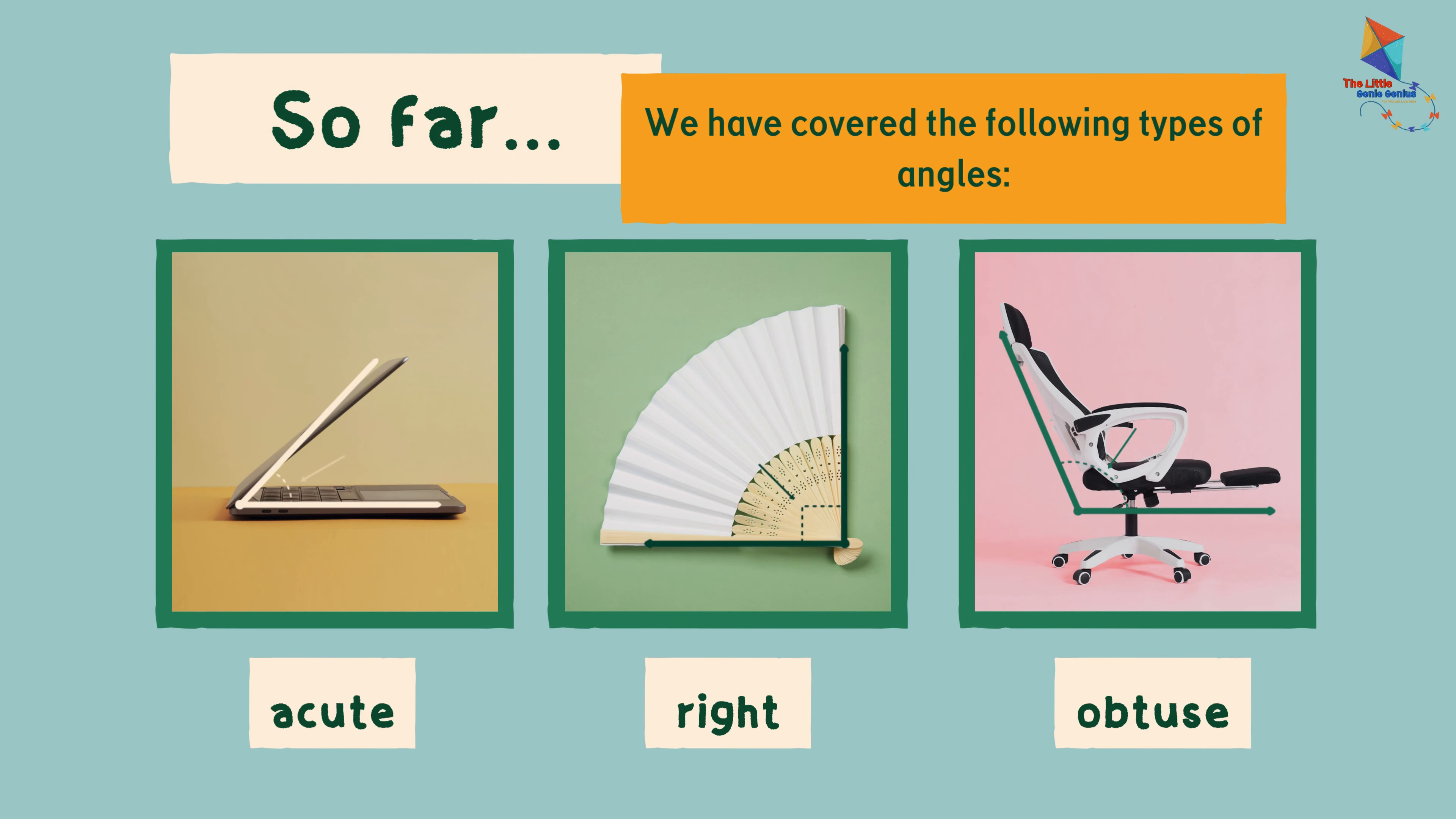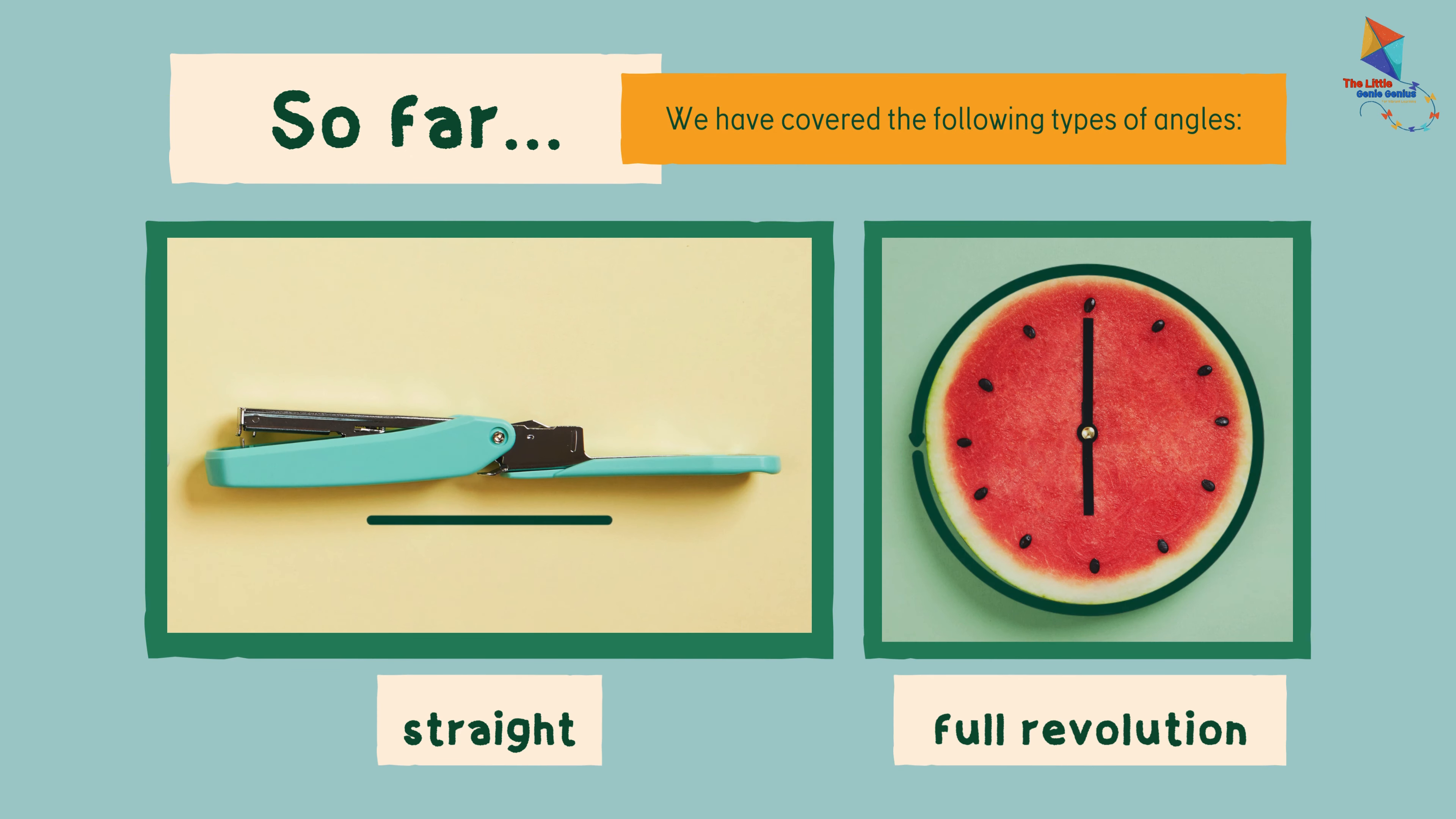So far, we have covered the following types of angles: acute angle, right angle, and obtuse angle. We have also learned about a straight line and a full revolution.